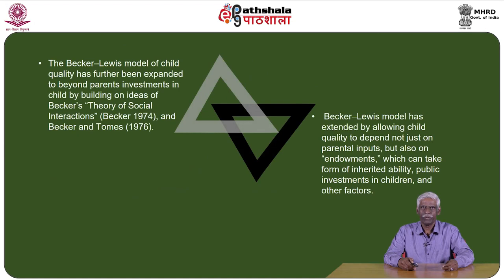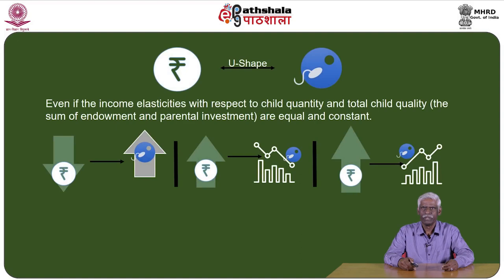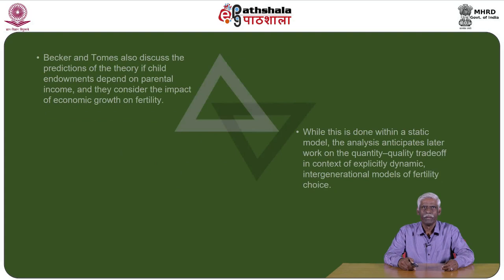The Becker-Lewis model was further expanded beyond parental investments in children by building on Becker's theory of social interactions (Becker 1974; Becker and Tomes 1976), allowing child quality to depend not just on parental inputs but also on endowments such as inherited ability and public investments in children. Becker and Tomes showed this can generate a U-shaped relationship between income and fertility — fertility is high at low income levels, decreases with rising income, and then increases again at higher income levels.